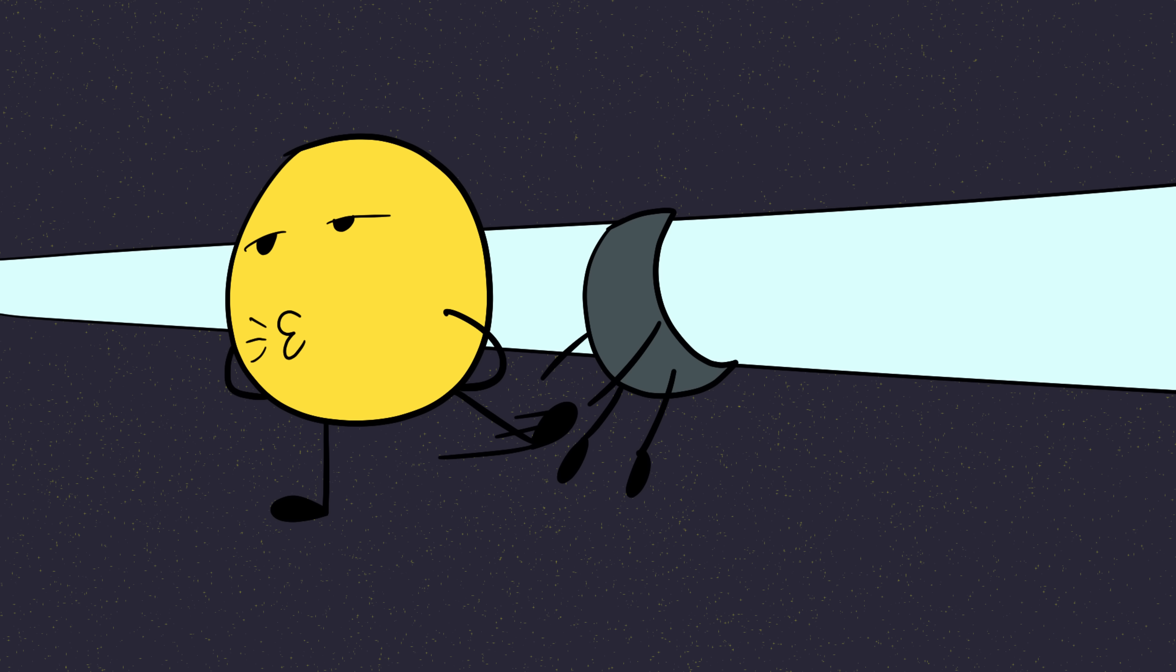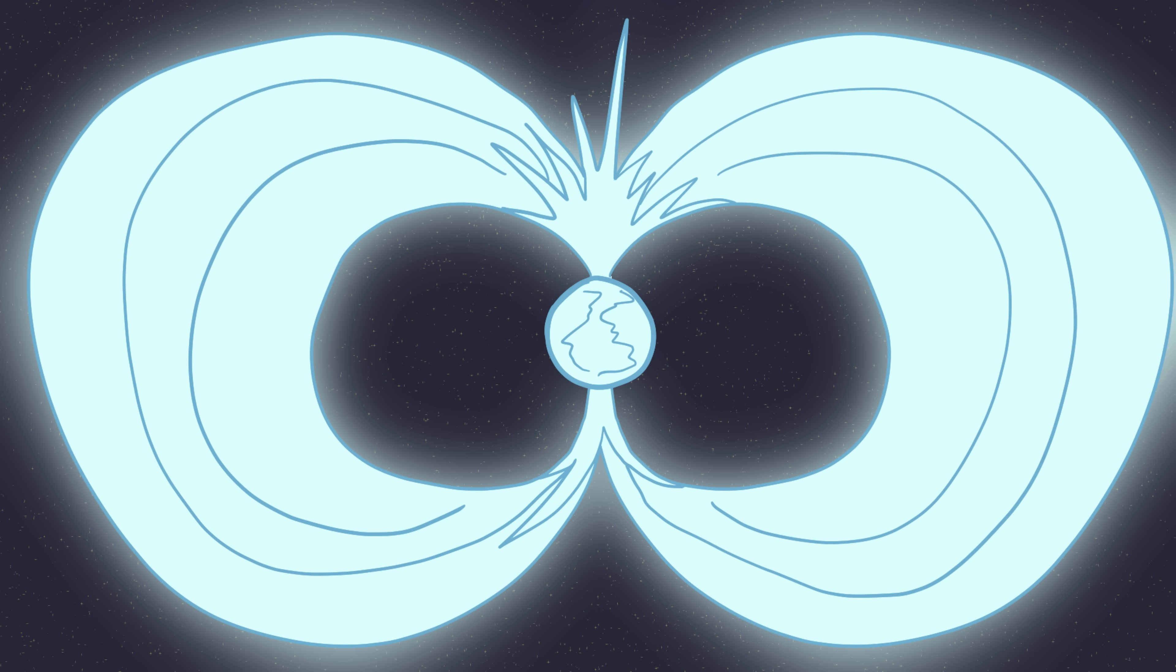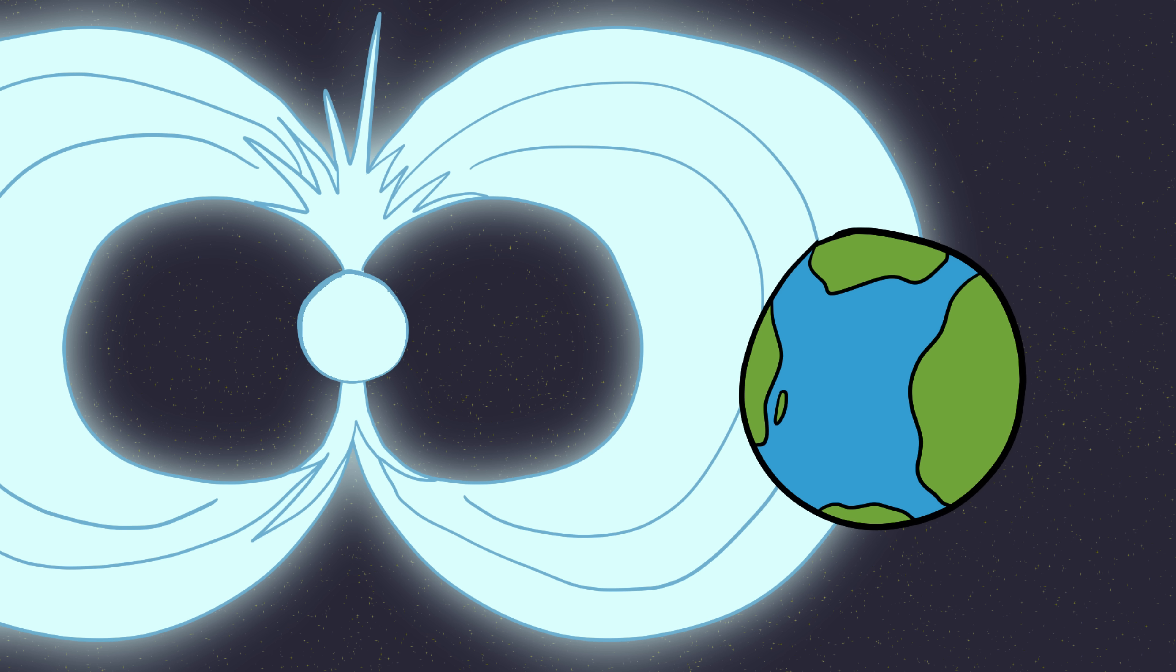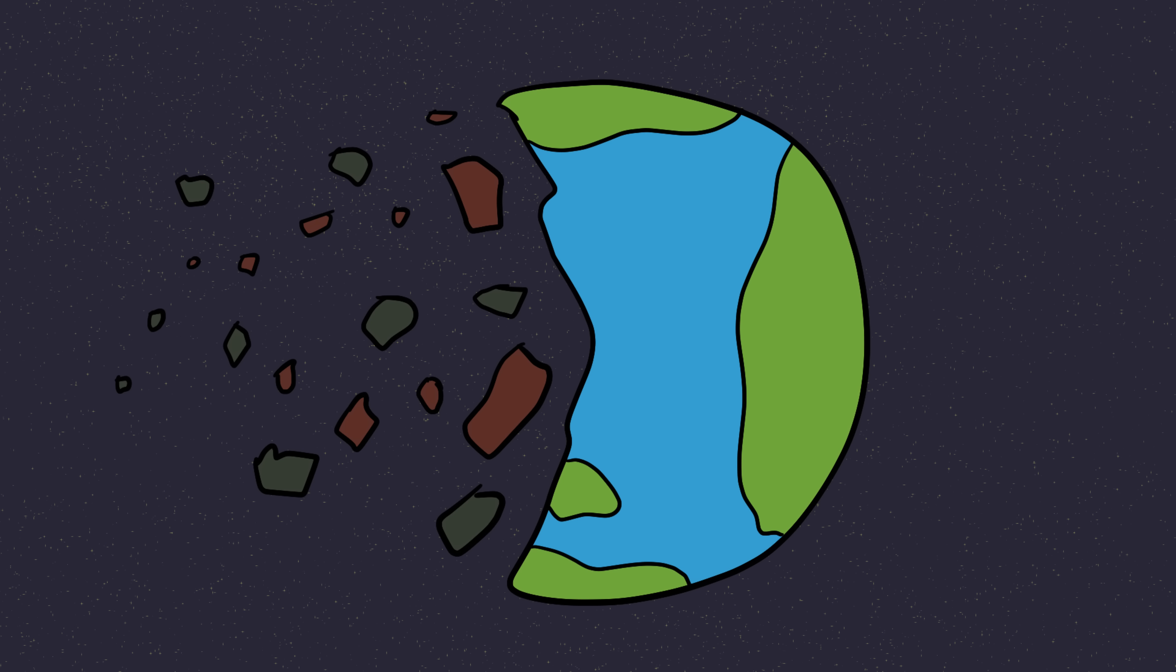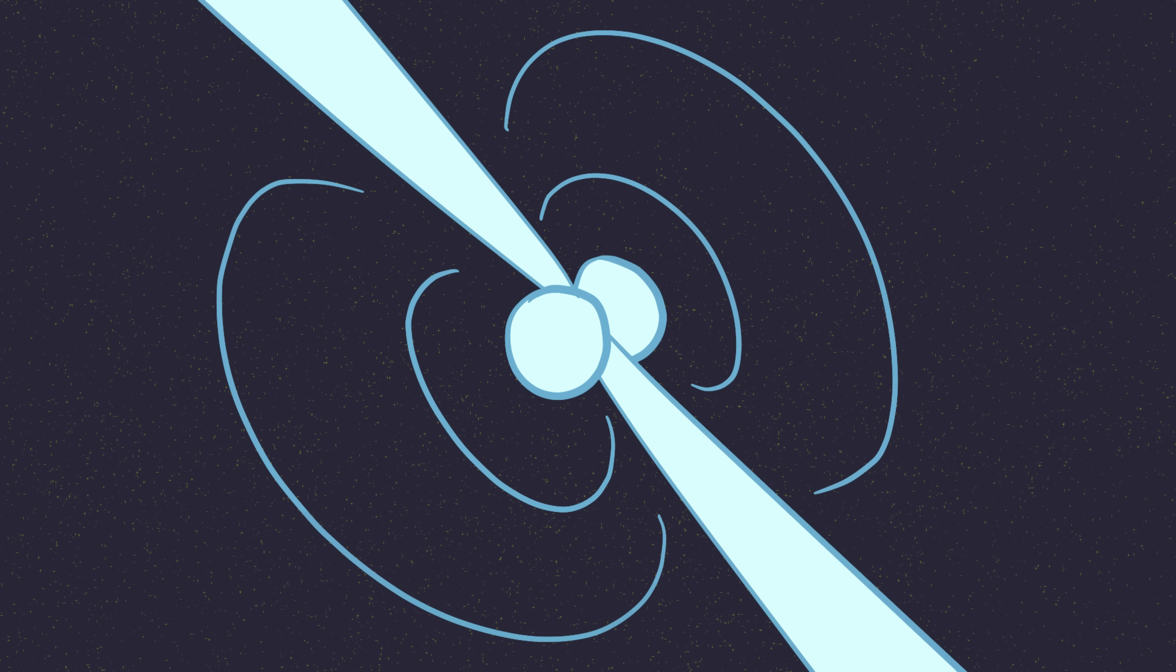Step into one of those beams, and your planet gets sterilized instantly. Some neutron stars called magnetars have magnetic fields trillions of times stronger than Earth's. If you got within 1,000 kilometers of one, the magnetic forces would literally rip the electrons out of your atoms. You disintegrate before you even touch the surface. And here's the kicker.